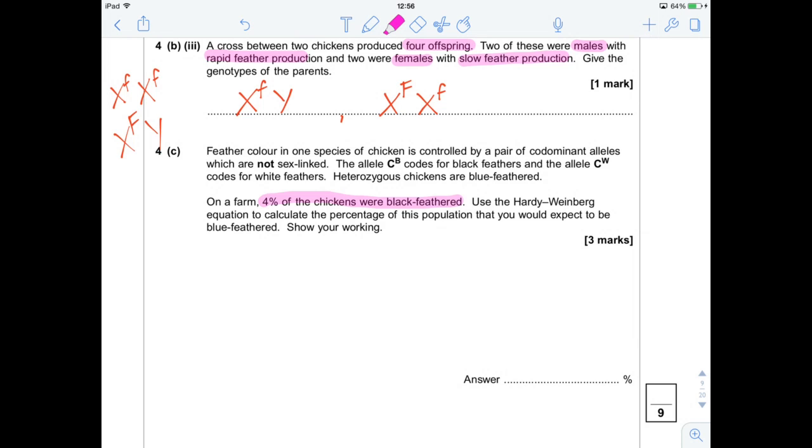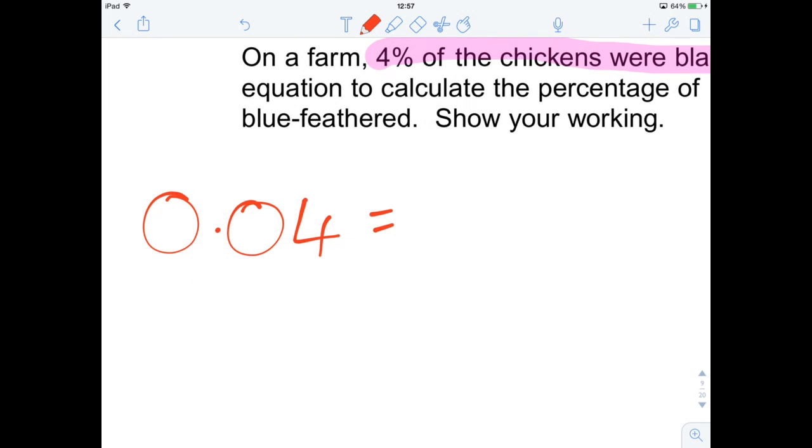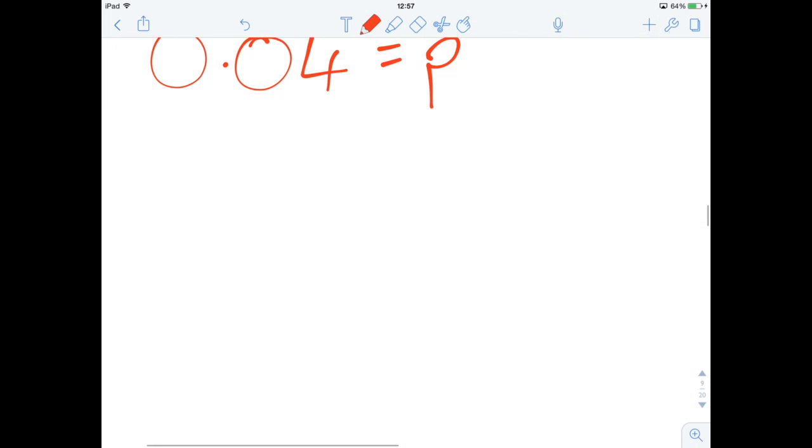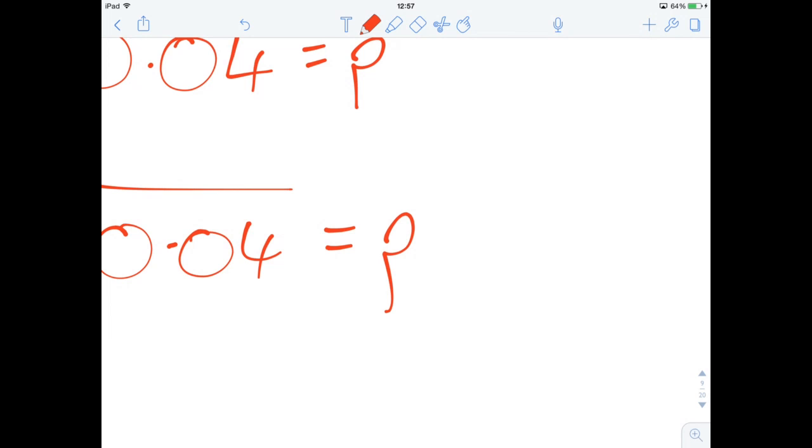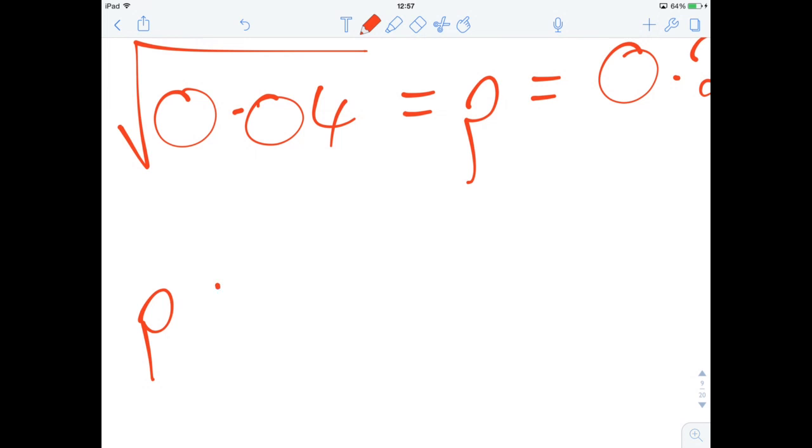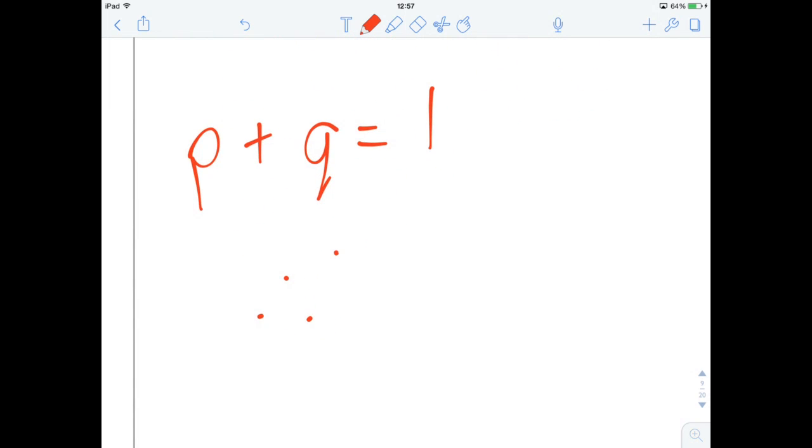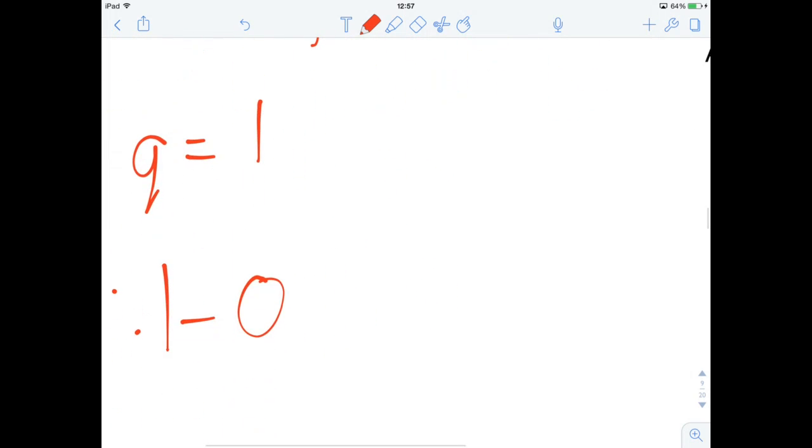It's asking us to work out heterozygous. So we can say that that 4%, 0.04, is p². We can root that. Root 0.04 equals p, which equals 0.2. We know that p + q = 1. Therefore, 1 - 0.2 = q, which equals 0.8.